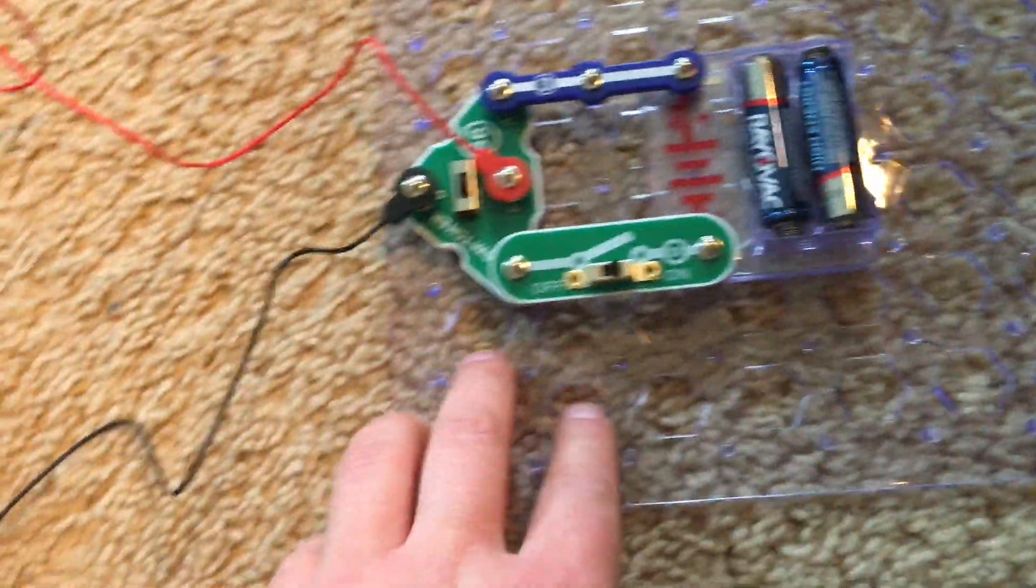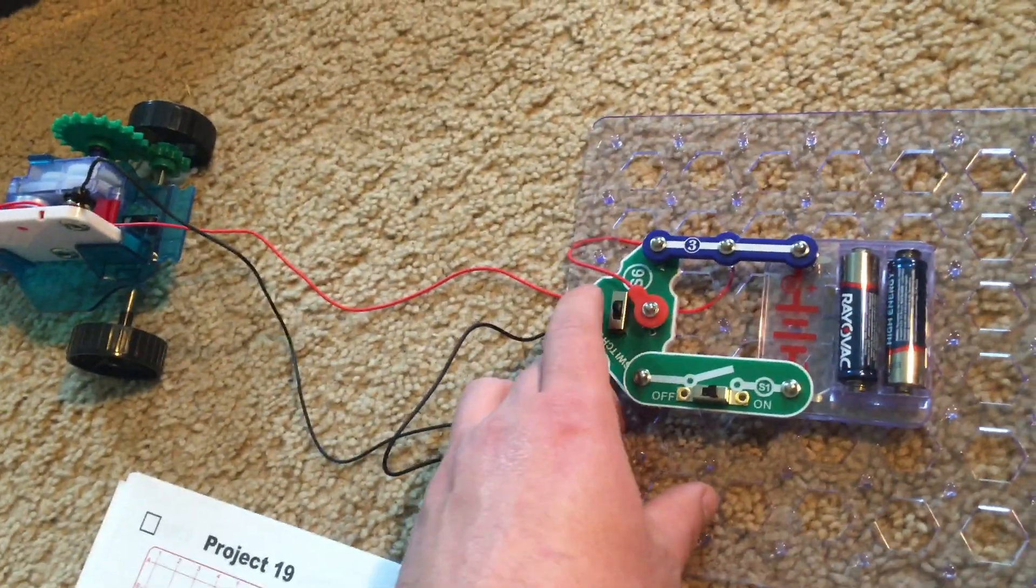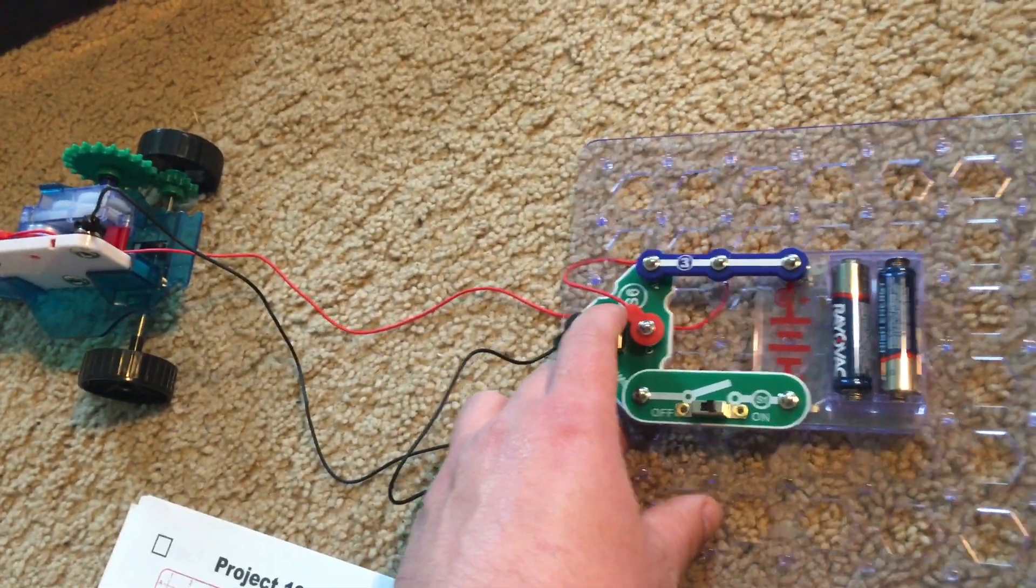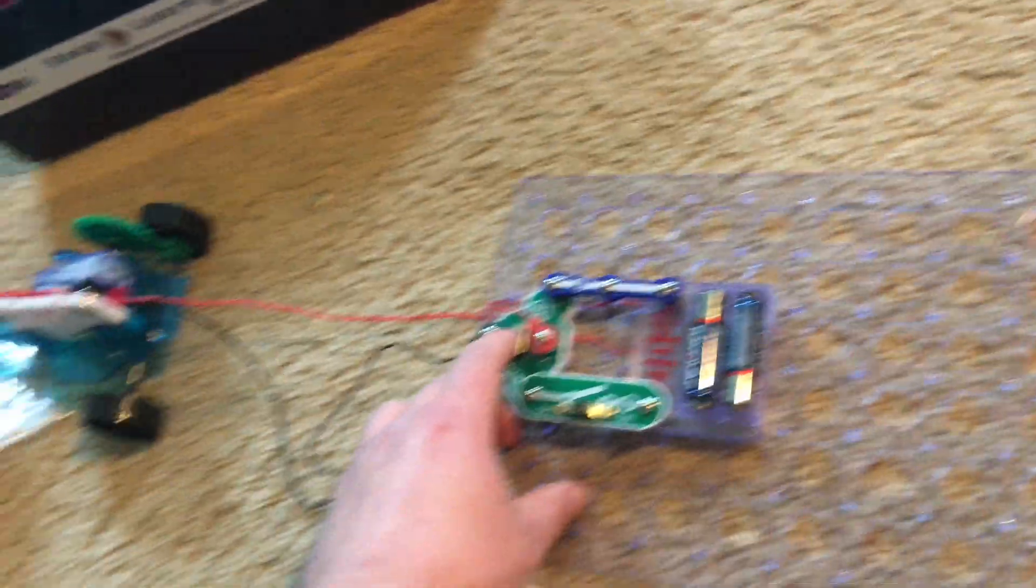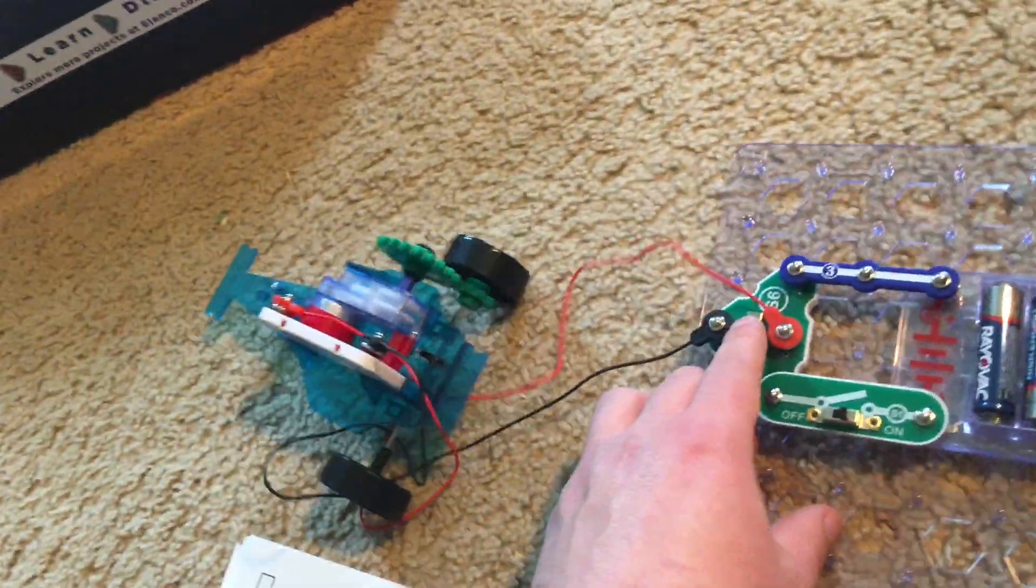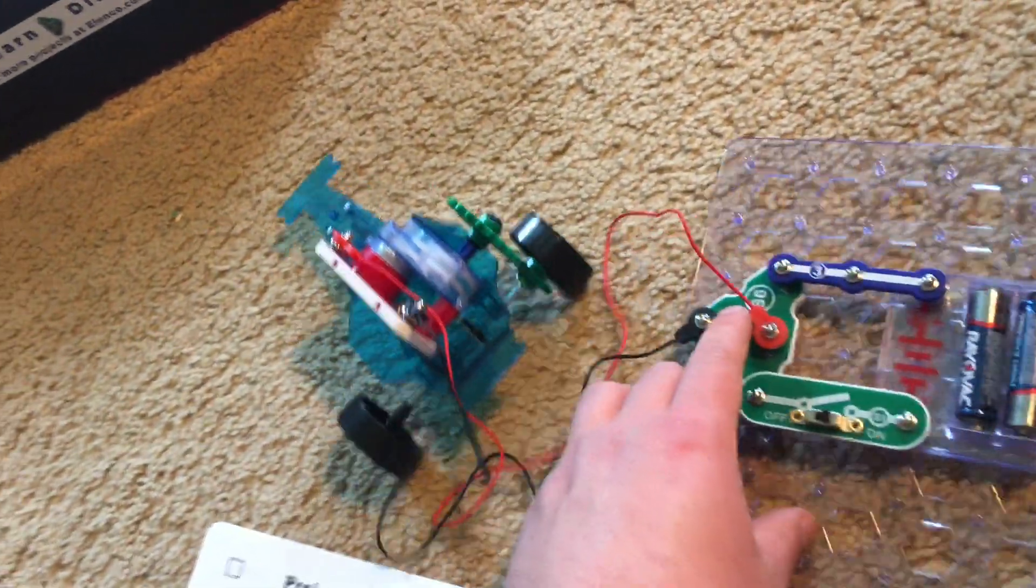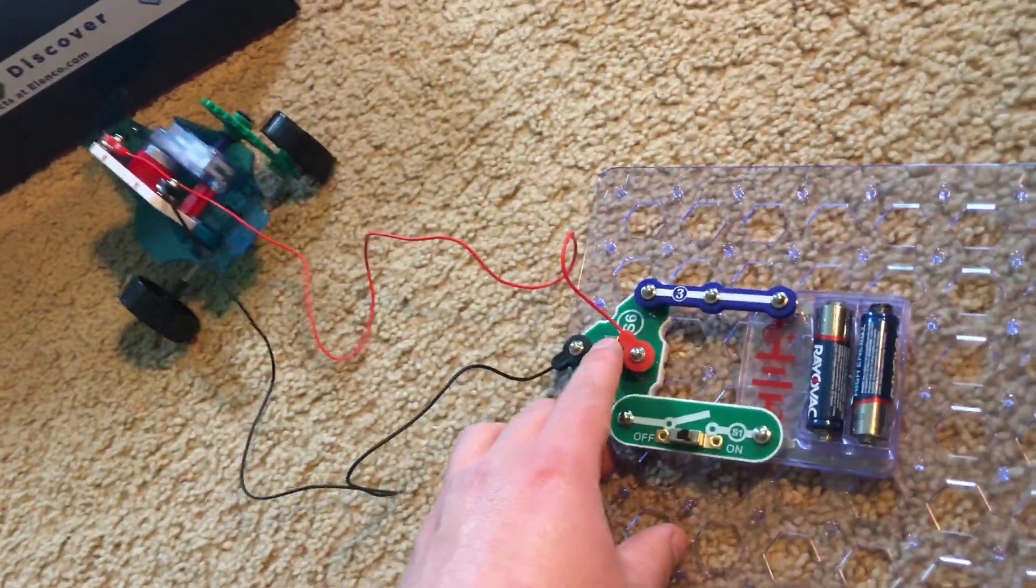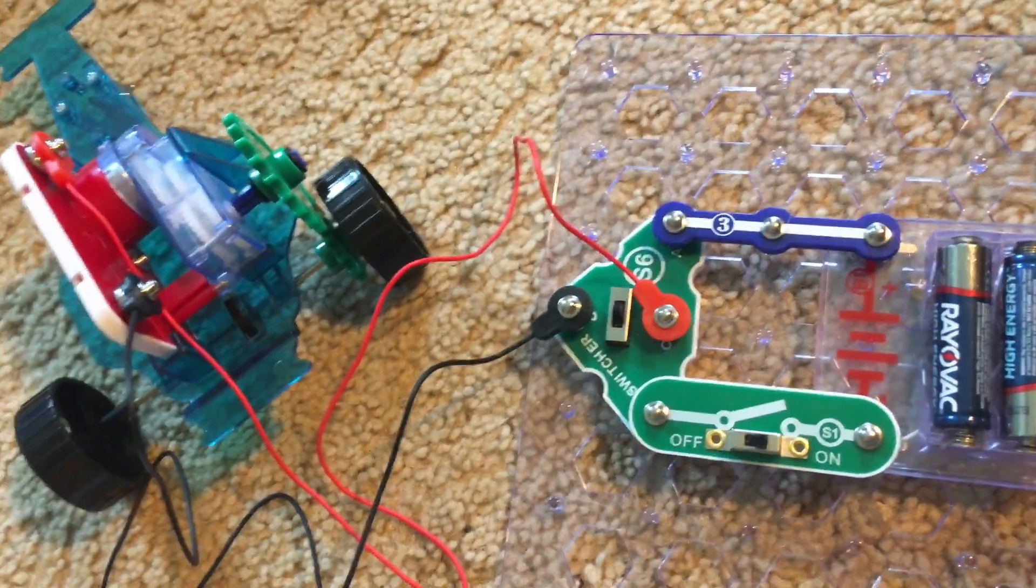Now, the slide switch is on. When I move the switcher toward me, the car moves forward. When I move it away from me, the car moves backwards. The gear shaft motor is allowing the car to move.